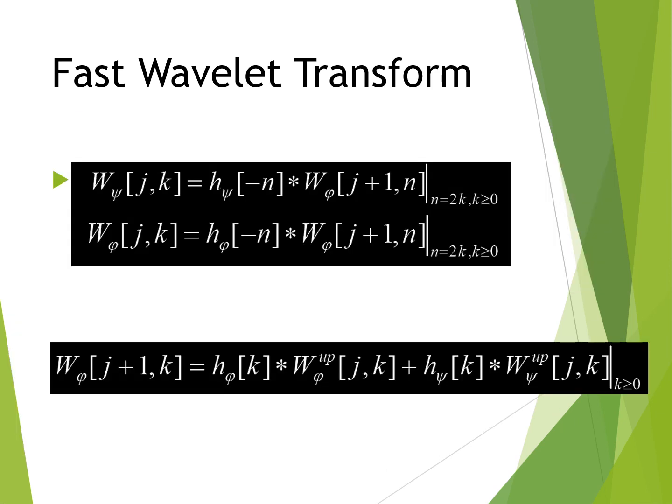We can write the convolutions evaluated at instant n equals 2k, for k greater than 0. As shown in the figure, evaluating convolutions at non-negative even indices is equivalent to filtering and down-sampling by 2. These equations are the defining equations for the computation of the forward Fast Wavelet Transform. For a sequence of length m equals 2^j, the number of mathematical operations involved is of order 2. That is, the number of multiplications and additions is linear with respect to the length of the input sequence, because the number of multiplications and additions involved in the convolutions performed by the analysis bank is proportional to the length of the input sequence.